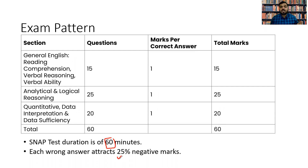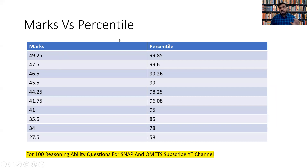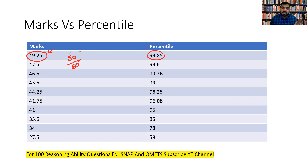Each wrong answer gives 0.25 negative marks. Talking about score versus percentile — if you're targeting 99.9 plus percentile in SNAP, the score you need is around 49.25, which is close to 50 marks out of 60. That means you're supposed to get 50 marks out of 60, which is only possible if you are attempting more than 90% of the paper.